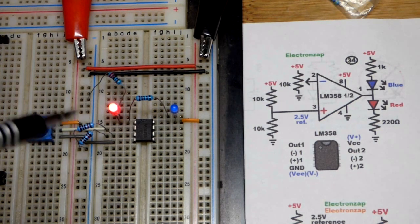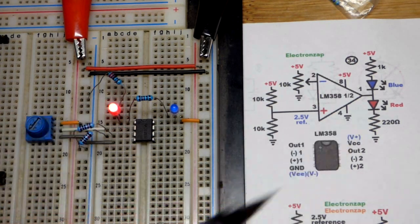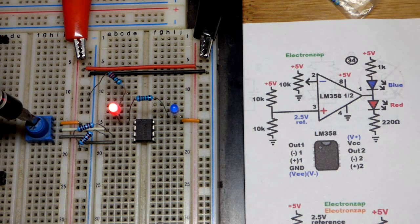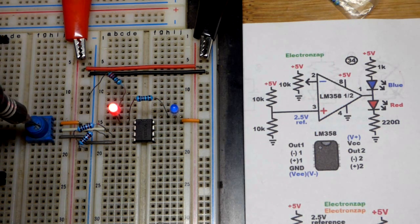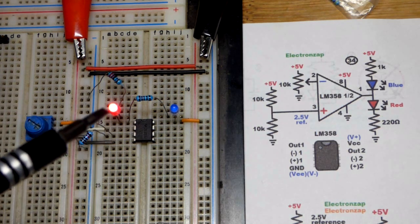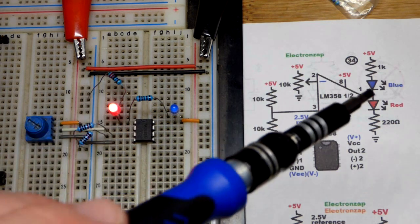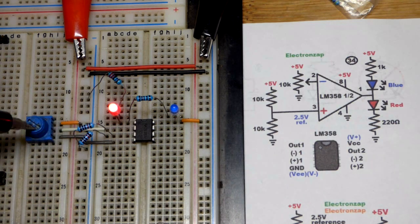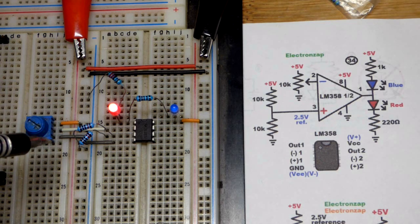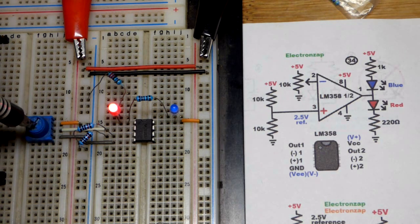So now if you saw the last video, this may look almost exactly the same. There's a little bit of difference though. We have an op-amp here, it's wired as an inverting comparator. Right now the output is high because that's how I wired the red LED.